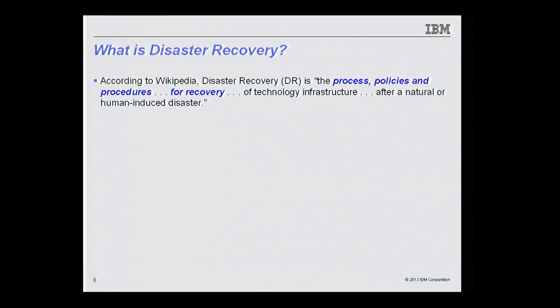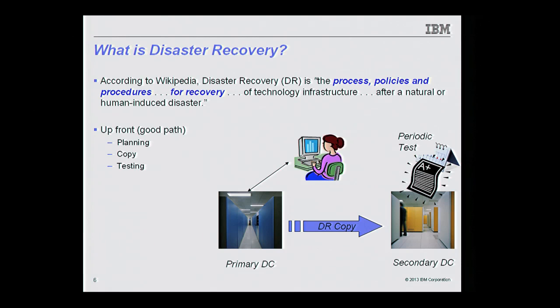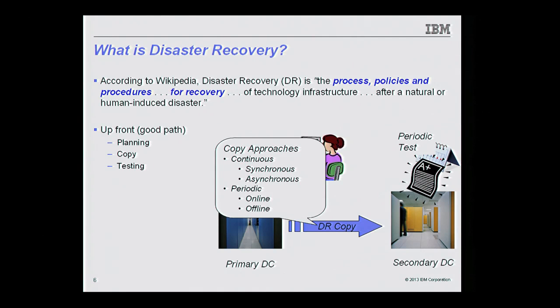The processes, policies, and procedures for recovery have three elements: what do you do before the disaster, when the disaster happens, and after the disaster. Before the disaster — the good path when everything's working fine — involves planning: figuring out what data needs to be copied, how to geographically disperse it, and testing to make sure your solution actually works. You can look at a continuous approach where data is always being copied, or a periodic approach — once a day, once a week, every six hours.